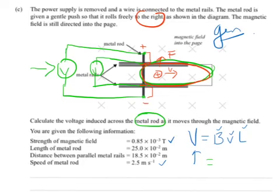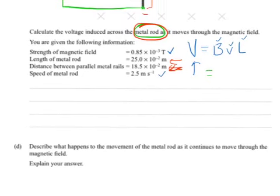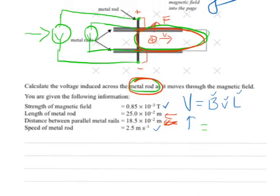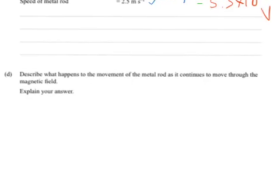I'm pretty certain we're supposed to use the length of the distance between the rails. Sorry, the length of the total rod, because it asks us for the voltage induced across the metal rod. The answer is 5.3 times 10 to the minus 4 volts. We'll see when the real answers come out if there's explanation to help with that.